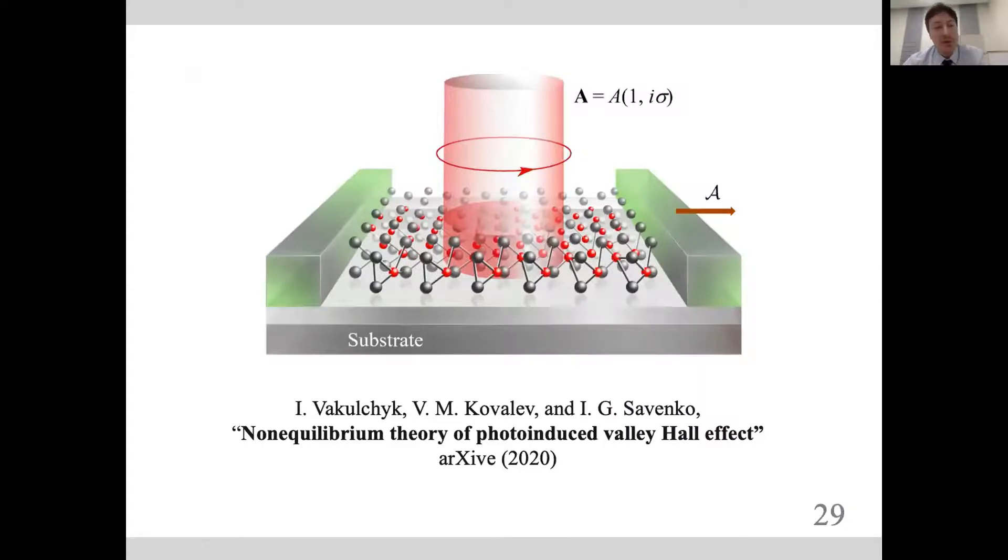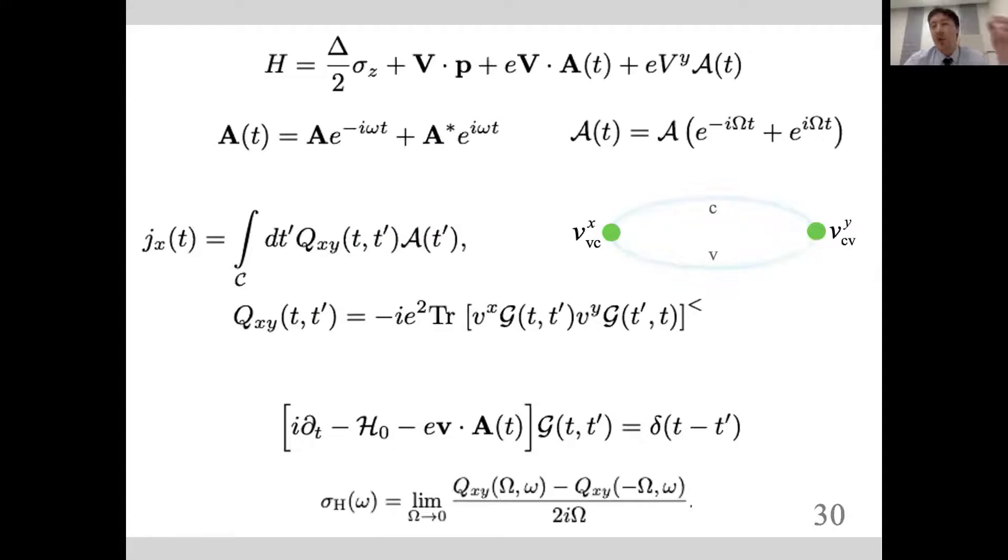We decided to see what will happen in a non-equilibrium situation. We have our setup: two-dimensional material on a substrate, two leads to apply constant voltage or electric field to the sample, and then we expose it to the electromagnetic field of light to pump the system. We decided to go through non-equilibrium Keldysh diagram technique to describe the system with conventional Hamiltonian, two fields—one pump field, one drag field—then use the standard formula for generalized conductivity which connects the vector potential with the electric current in the system.